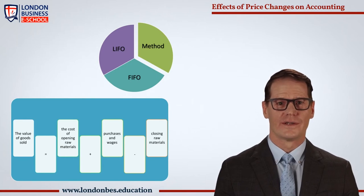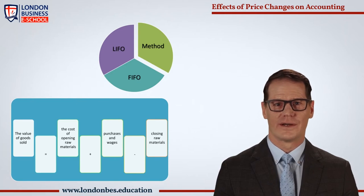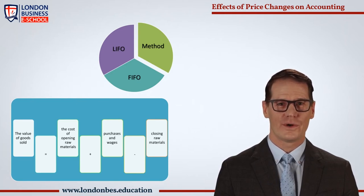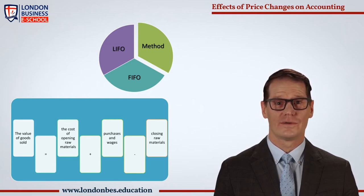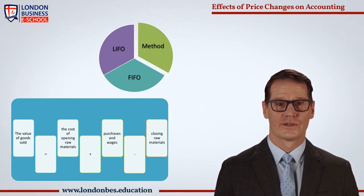Depreciation on fixed assets: in historical cost accounting, depreciation is always charged on the original cost of the assets — the cost of a machine is divided by its effective working life. However, depreciation should be charged for the replacement of fixed assets, and when prices are increasing, depreciation should be charged on the increased value and not on the original value.